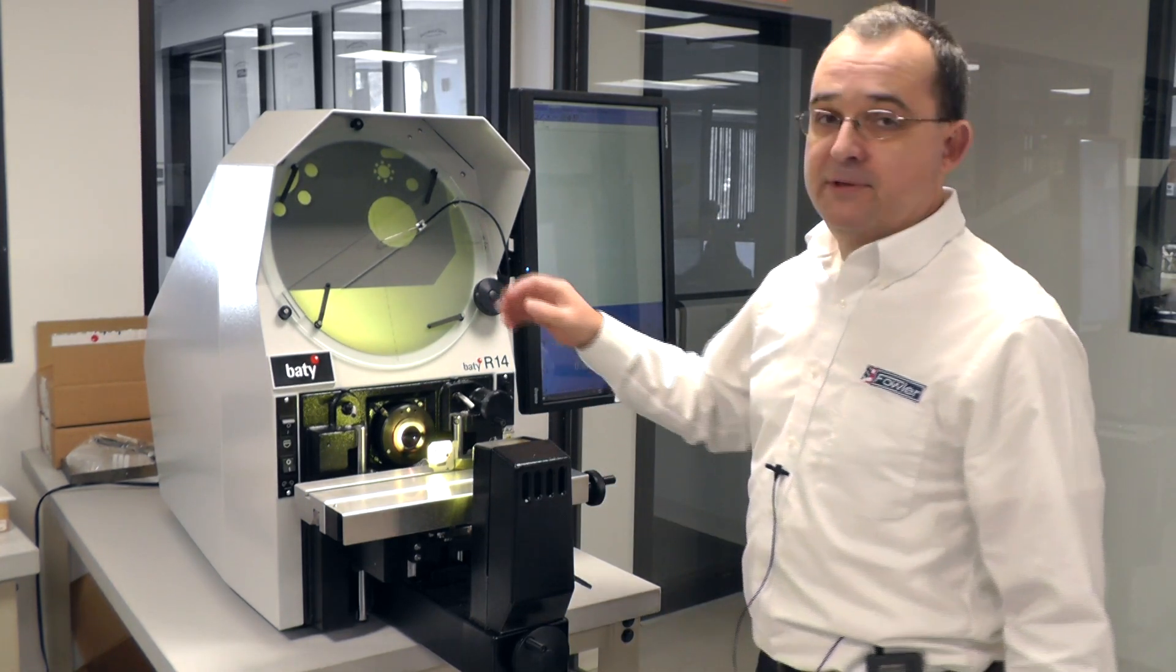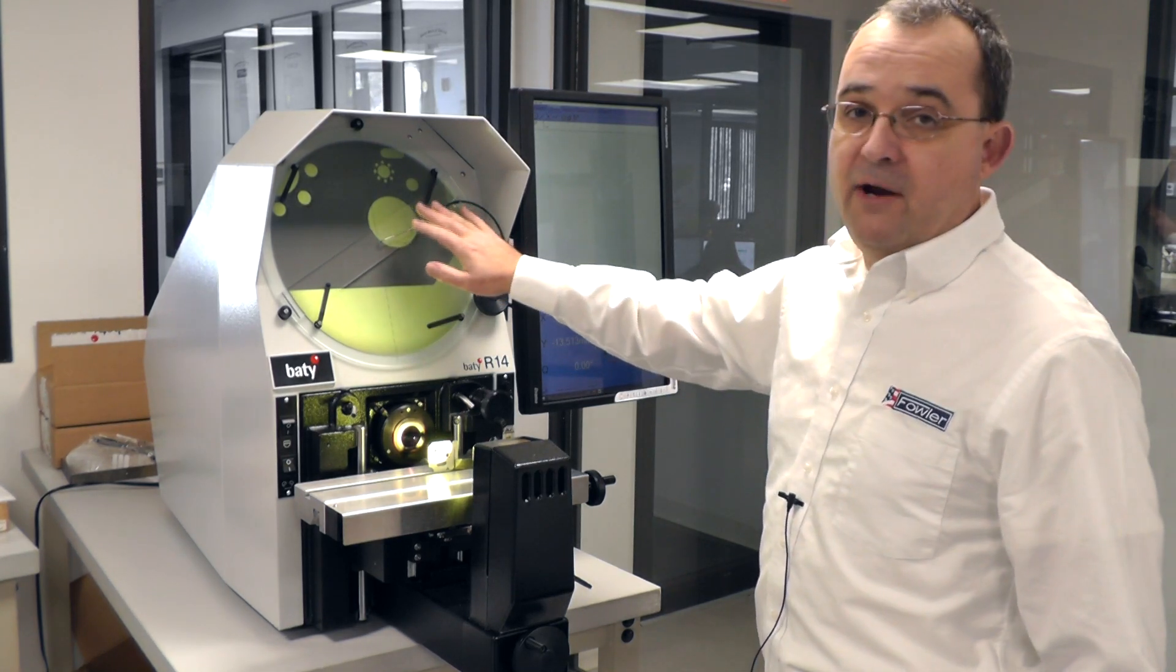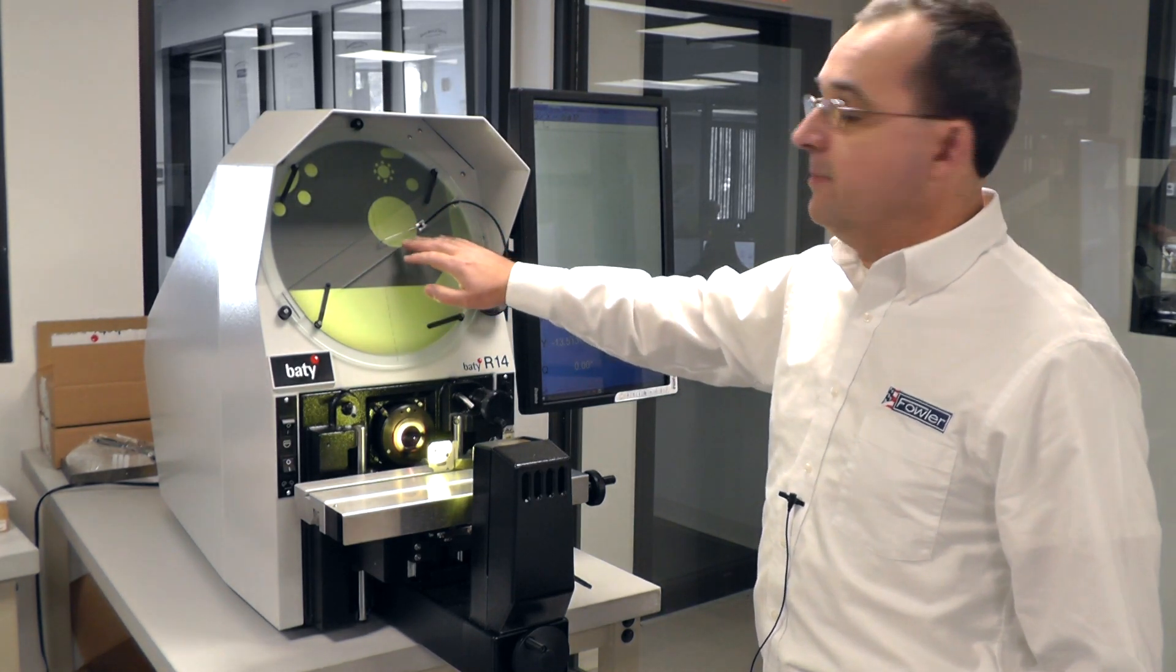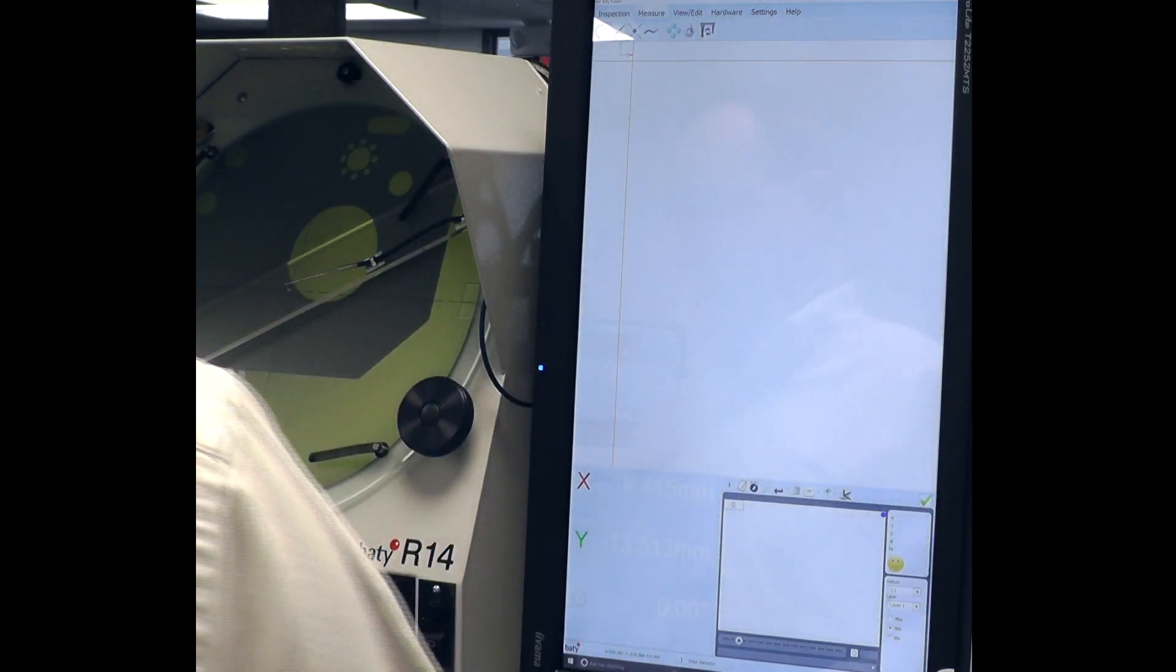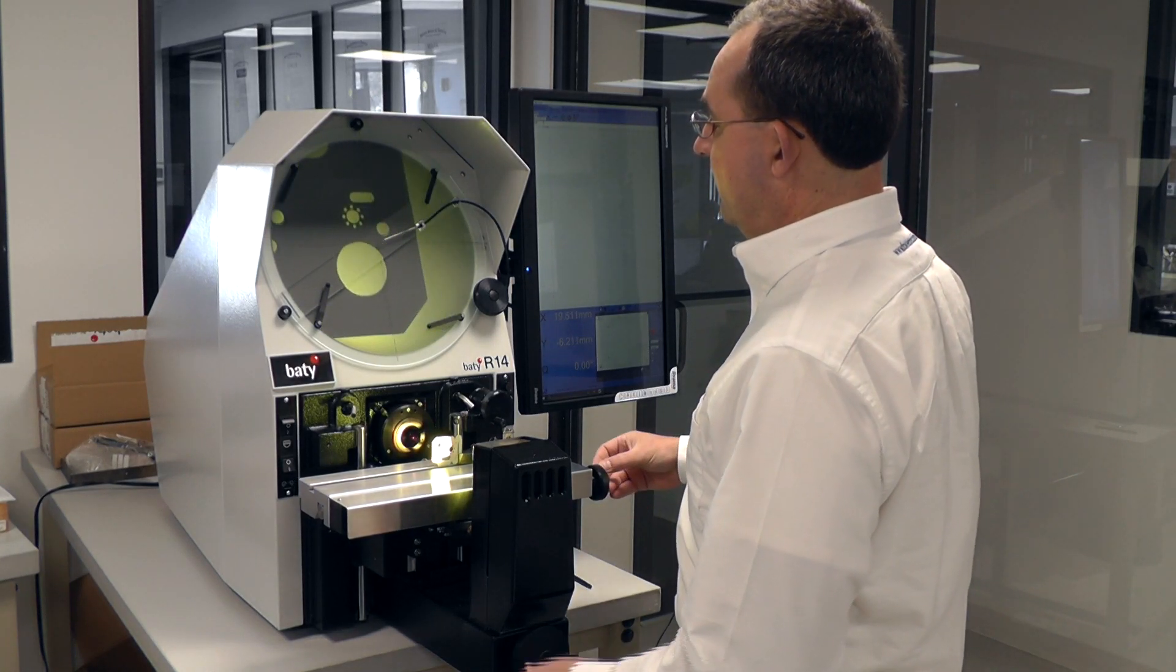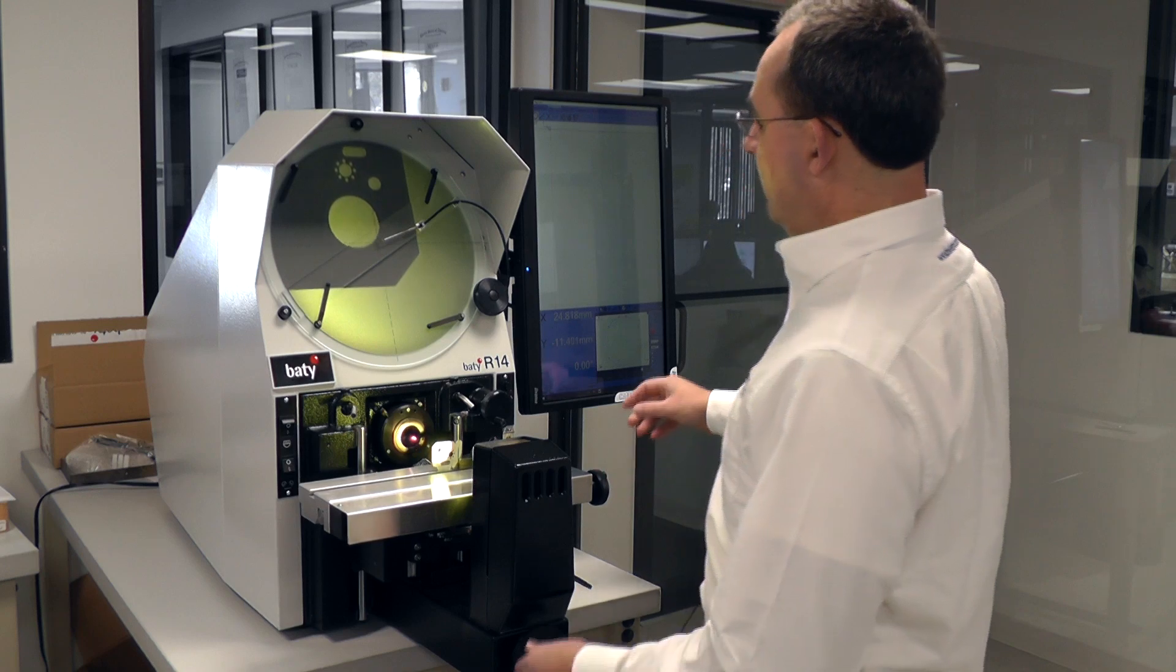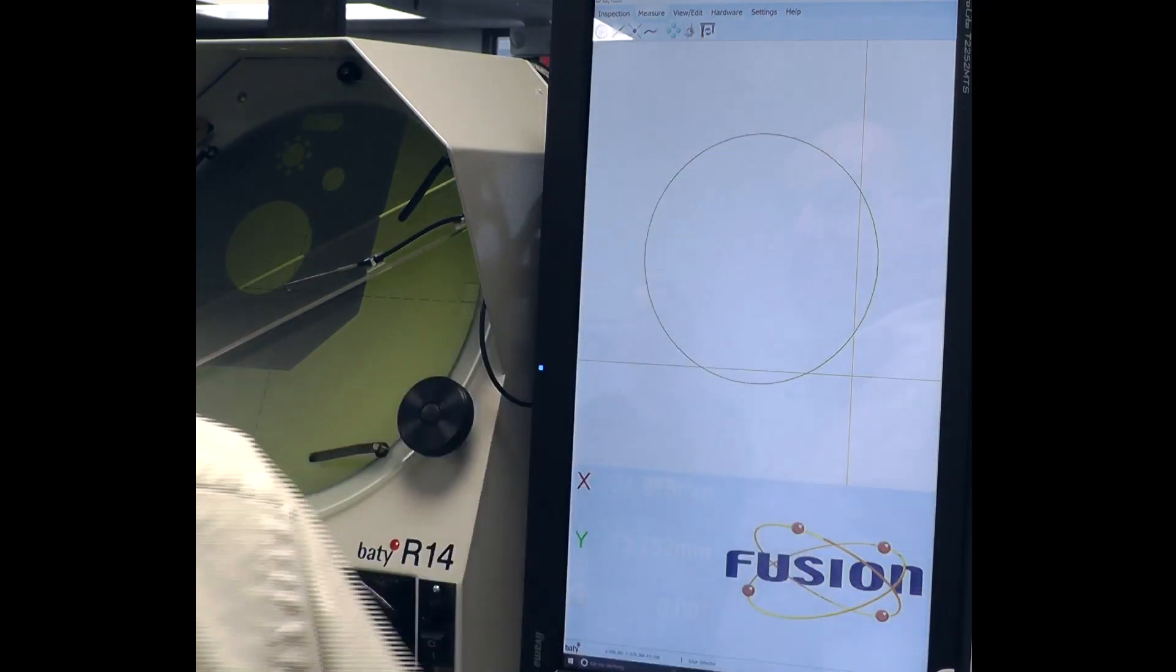We're going to start our measurement routine by highlighting the circle in the center of the screen here. We have an optical edge sensor that will be working and taking the points automatically for us. So we select our circle icon across the edges with our optical fiber. The points are automatically registered in the software. We select finish. Our circle has been measured.